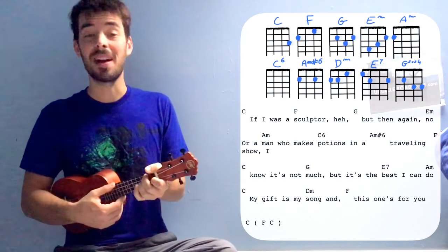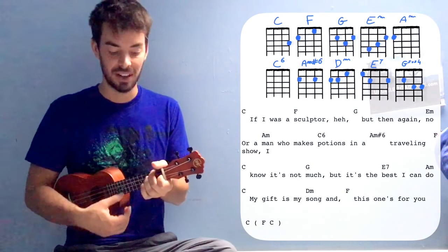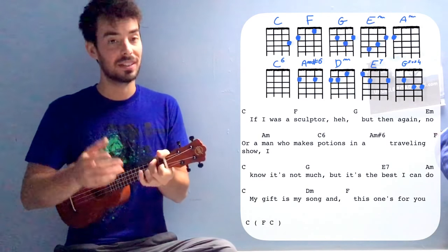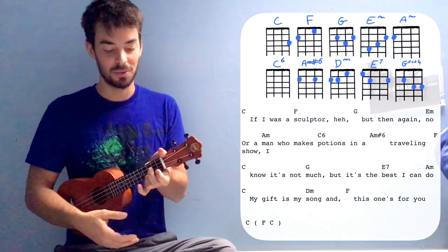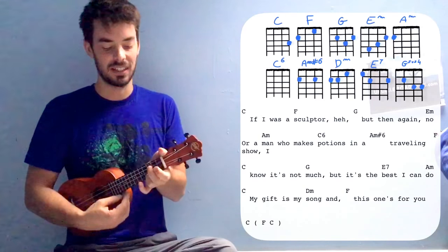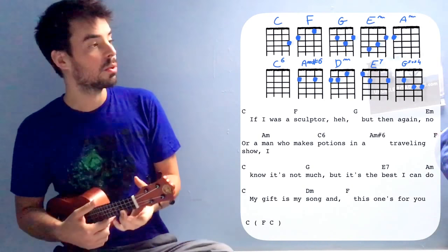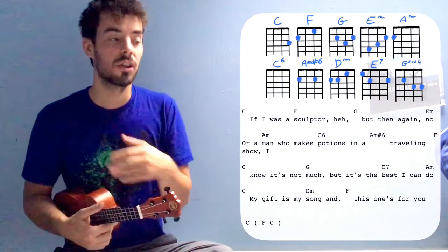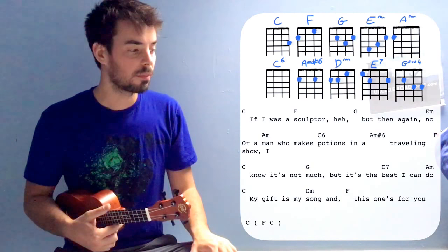Travelling show, I know it's not G on the march. But it's the E7 on the best I can do. E minor on do. C. My gift is my song. And F. This one's for C on U. F, C. Right. So those are the chords and where they land on the verse.